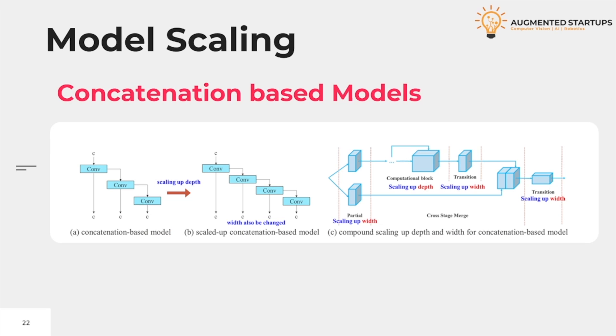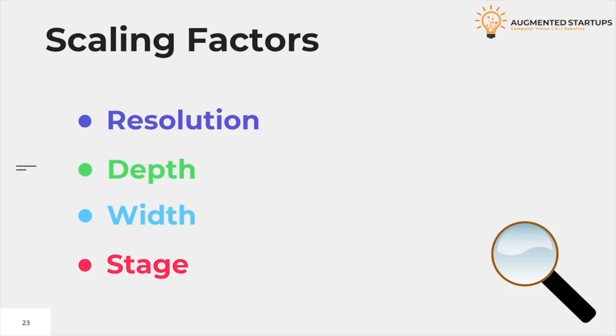Model Scaling. All concatenation-based models will change the input width of some layers and the depth of those models as well. These provide great support to the model in increasing the accuracy as the model is now capable of identifying small objects and large objects. The scaling factors: the model is dependent on resolution, depth, stage, and width.